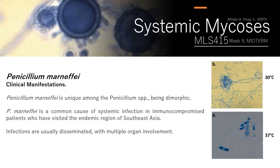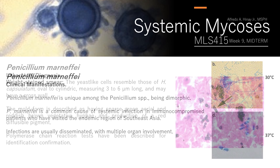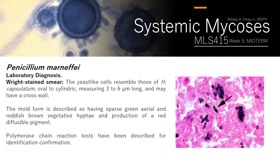The fungus can be isolated from cutaneous lesions frequently present in infected patients. For laboratory diagnosis with Wright-stained smear, the cells resemble those of Histoplasma capsulatum — oval to cylindric cells measuring 3 to 6 micrometers with a cross wall. The mold form has sparse green aerial and reddish-brown vegetative hyphae and produces a red diffusible pigment. Since Penicillium marneffei is somewhat similar to Aspergillus, polymerase chain reaction tests have been described for identification and confirmation.